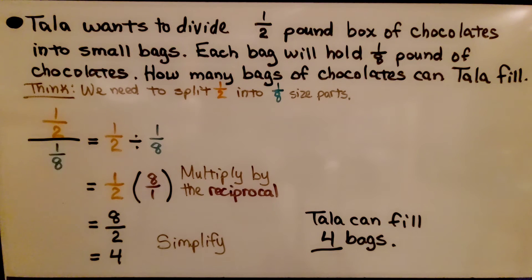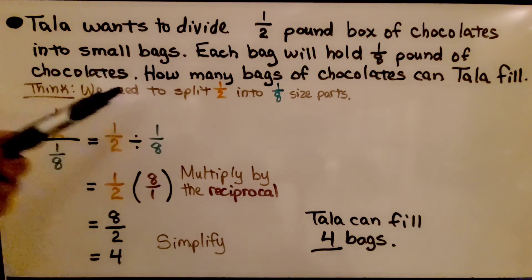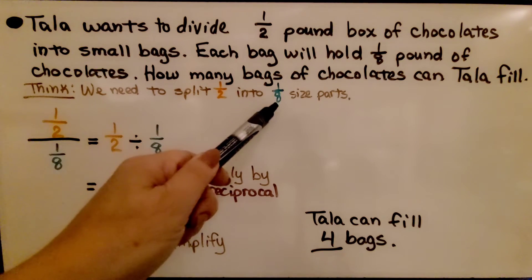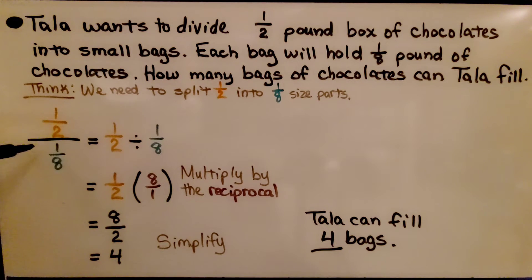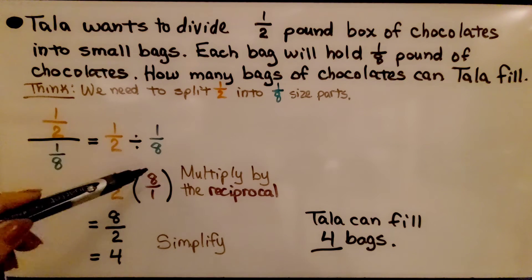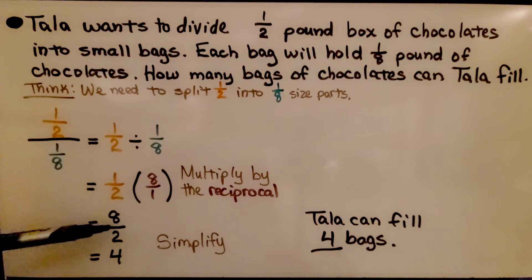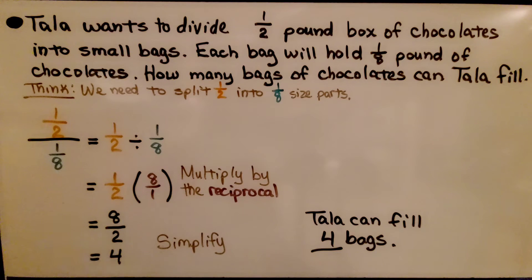Let's try a word problem. Tala wants to divide a 1/2 pound box of chocolates into small bags. Each bag will hold 1/8 pound of chocolates. How many bags can Tala fill? We need to split 1/2 into 1/8-size parts: 1/2 divided by 1/8. We multiply by the reciprocal, 8 over 1, and go straight across. We get 8/2, which simplifies to 4. Tala can fill 4 bags.